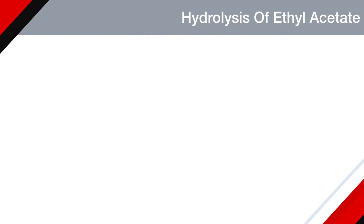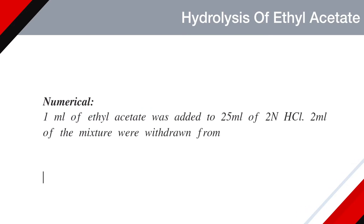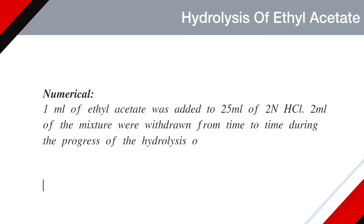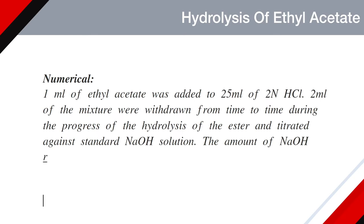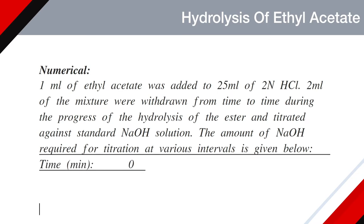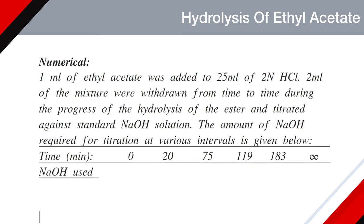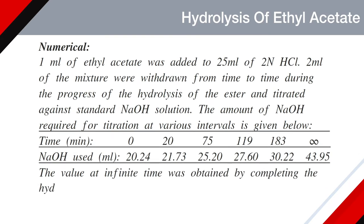Let's solve a numerical based on this equation. 1 ml of ethyl acetate was added to 25 ml of 2 normal hydrochloric acid. 2 ml of the mixture were withdrawn at various times during the hydrolysis and titrated against standard sodium hydroxide solution. The amount of sodium hydroxide required at various intervals is: time (minutes): 0, 20, 75, 119, 183, and infinite; NaOH used (ml): 20.24, 21.73, 25.20, 27.60, 30.22, 43.95. The value at infinite time was obtained by completing the hydrolysis on boiling.